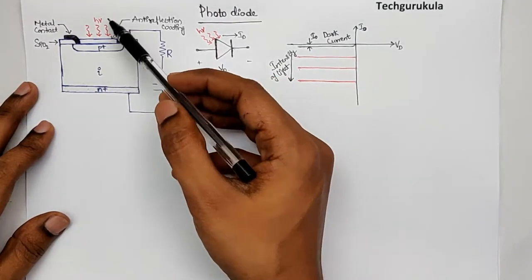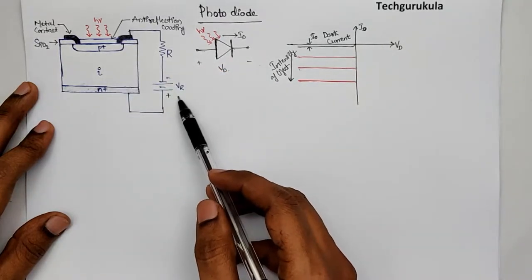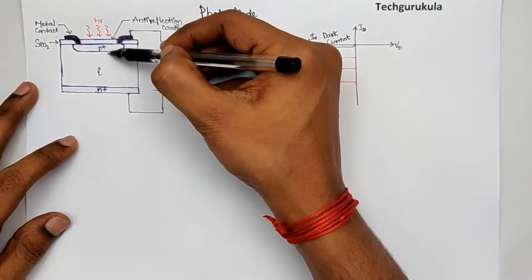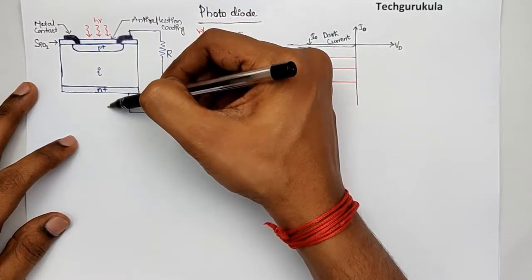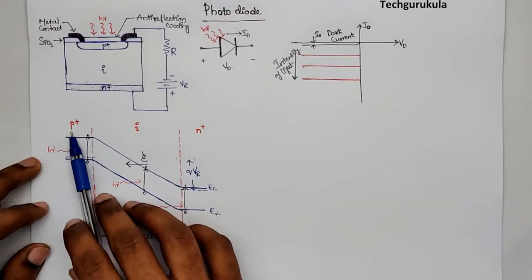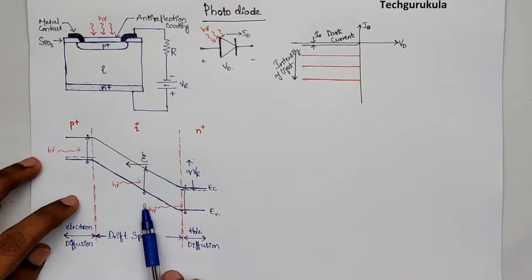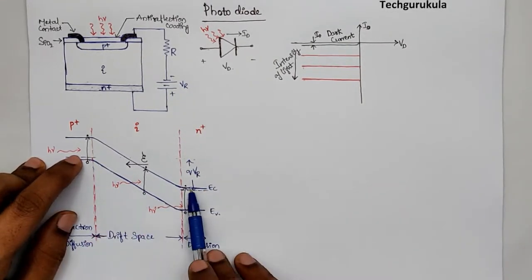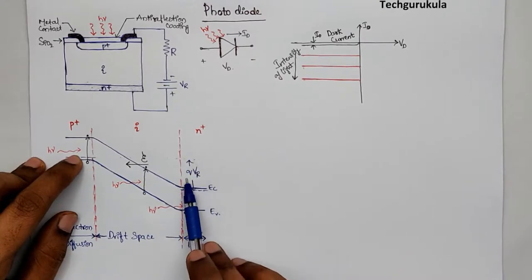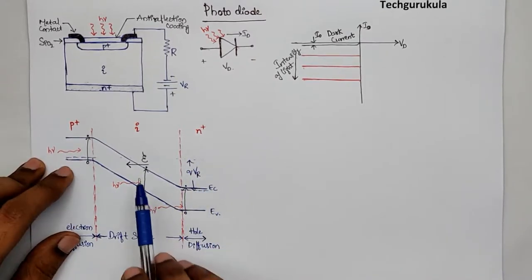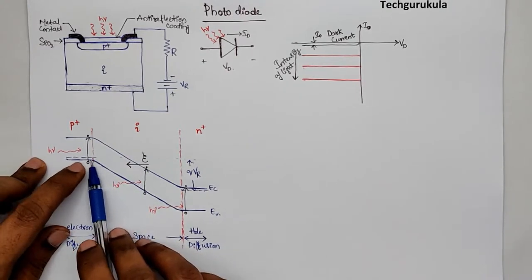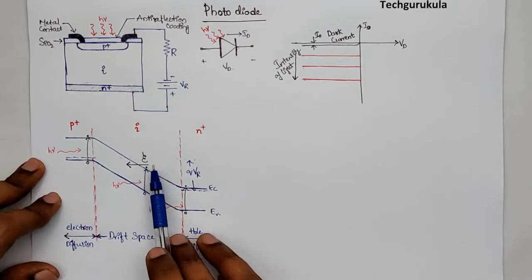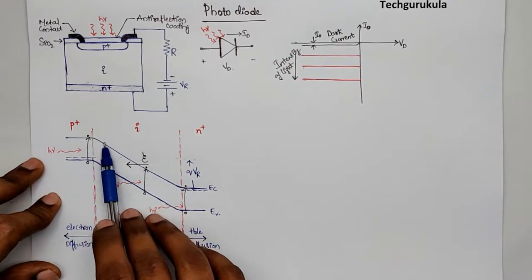Now let's draw the energy band diagram at this operating point for the PIN diode, taking the P-plus region, intrinsic region, and N region. Under reverse bias with voltage V_R applied, the Fermi energy levels split and the difference between them is Q times V_R. There is an electric field in the depletion regions and in the intrinsic region, directed in the negative X direction because the slope of the energy band diagram is negative.